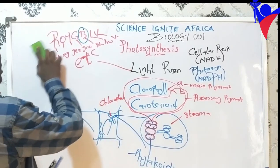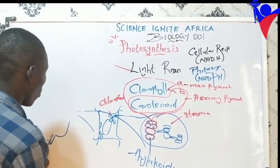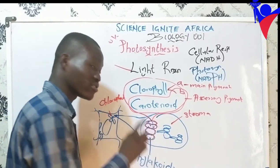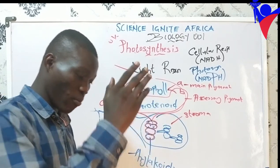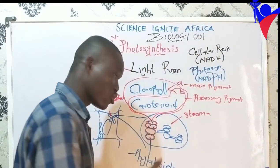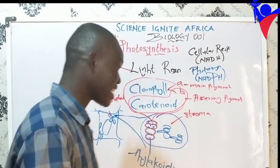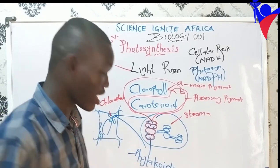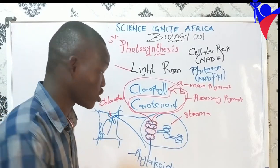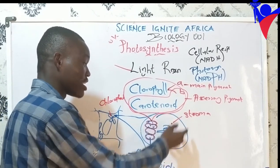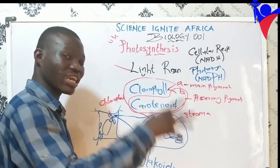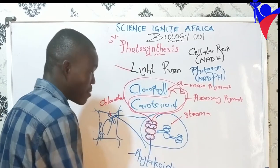Looking inside the membrane of the thylakoid — the light reaction occurs on the thylakoid membrane. In your plant cell, we have an organelle called the chloroplast containing chlorophyll. Inside the chloroplast, different structures joined together are called the thylakoid. The surrounding fluid — like the cytosol of the chloroplast — is the stroma, and that is where the dark reaction occurs. The light reaction occurs in the thylakoid, or on the thylakoid membrane.